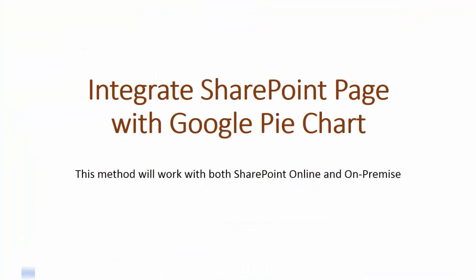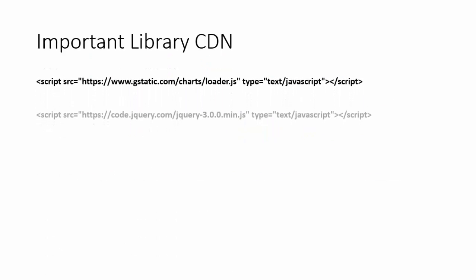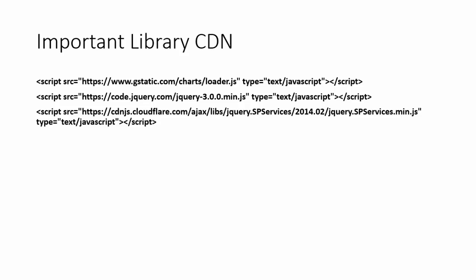Before you start this demo, there are some important steps. You have to use some JS files — basically three types. I am using their CDN versions: first is loader.js, second is jquery.min.js, and third is spservice.min.js. You can download these libraries and put them in your Site Assets library, or directly use the CDN in your HTML page.